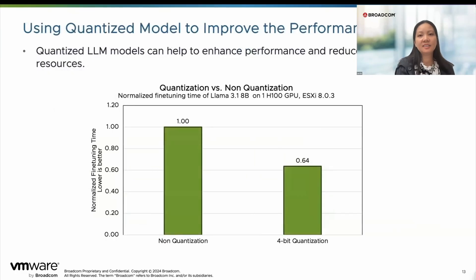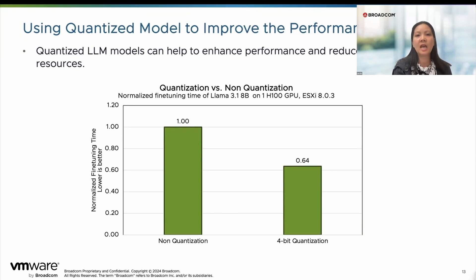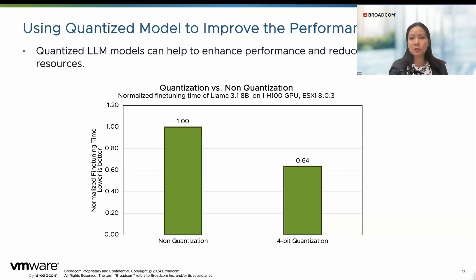Another technique that many people are interested in to save computing resources and improve performance is using quantized models. Quantization is a technique to compress the original model from higher precision to lower precision, which reduces memory usage, reduces compute requirements, and saves resources while increasing performance. Here I illustrate using quantized models in fine-tuning tasks, showcasing the difference between the original model and the quantized model. With LLAMA 8-billion on H100 GPU, we can see about a 36% difference, making it one of the key techniques to increase fine-tuning performance. The same impact can be seen for inference tasks as well.